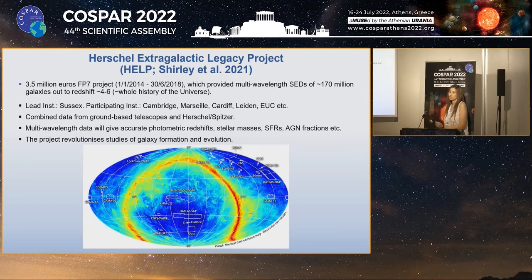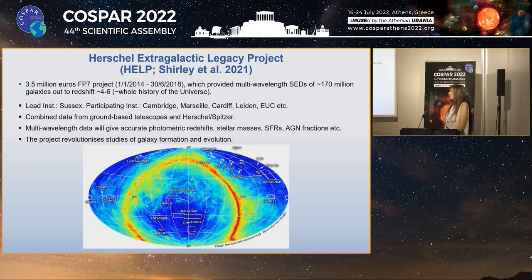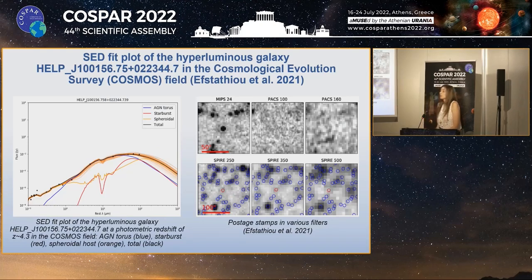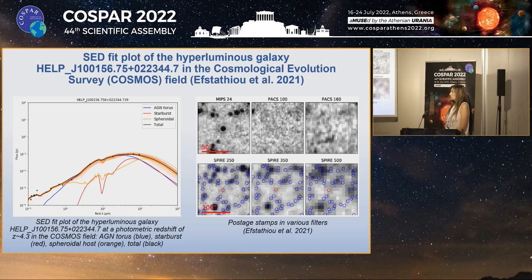We have also fitted many objects studied by HELP. HELP was a large project which assembled ultraviolet to sub-millimeter data of over 170 million galaxies. The European University of Cyprus was one of the participating institutes in this project. HELP is much deeper than WISE, its database is public, and it is therefore more suitable for determining the space density of obscured quasars at redshifts higher than 4 and exploring the physics of AGN, as well as their role in galaxy evolution at those redshifts. Here we have a hyperluminous galaxy at a photometric redshift of 4.3, discovered in the COSMOS field, which was one of the fields studied by HELP. I present the SED of this galaxy fitted with the Cygnus multi-component radiative transfer models — this is also an AGN-dominated object.